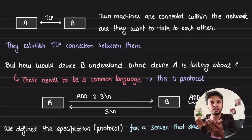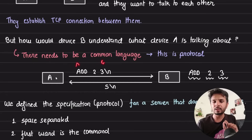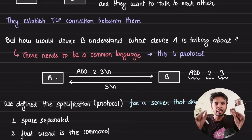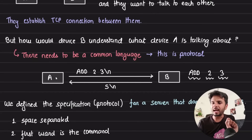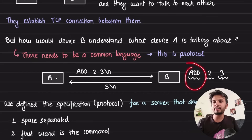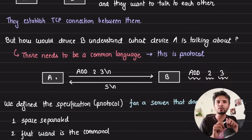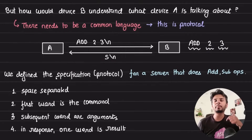If I specify a language — basically a protocol — which says that I would pass in a sentence like 'add 2 3' followed by a slash, and when you see this, break it down by space: the first word is a command, the subsequent words are its arguments. So you would know that 'add 2 3' means adding two and three, and in the response you send the result followed by a slash — so you send '5/'.